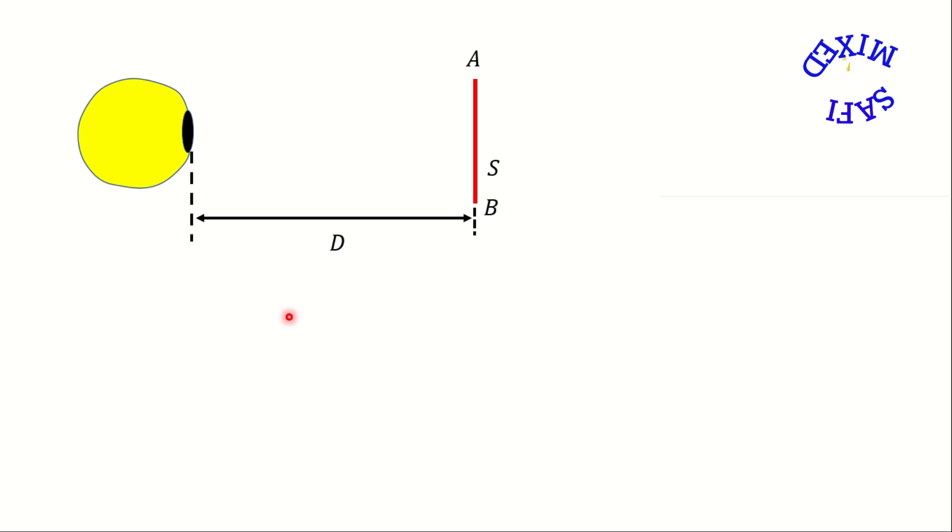For simplicity I would like to call the different parts of eye collectively as optical part of the eye. A ray from end A of the object passes through the optical part of eye reaching the retina, hitting it at position B of the retina.